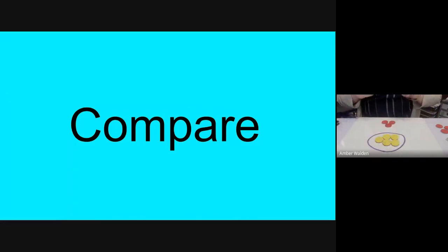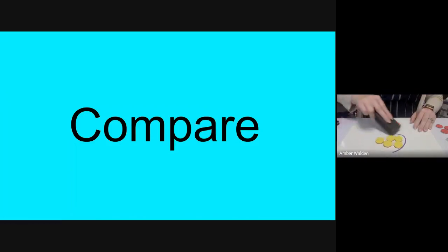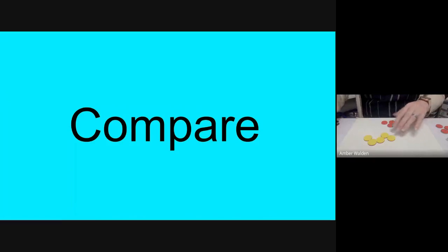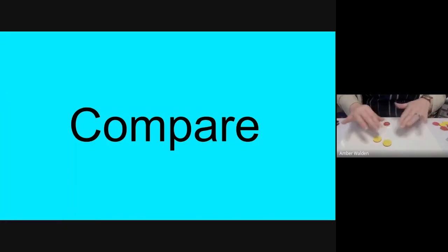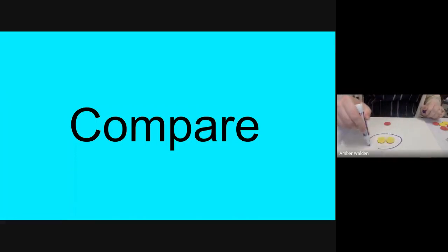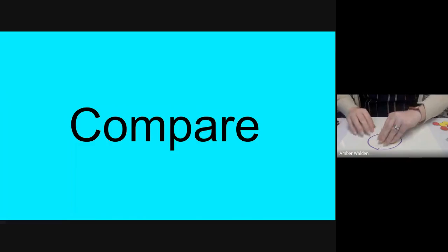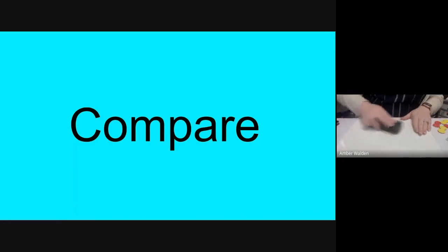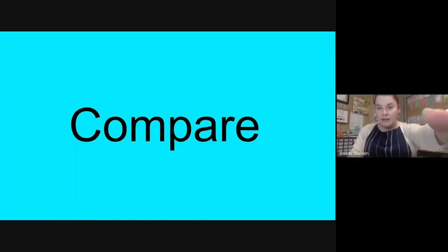Let's do one more example before I show you what you're going to be working on. What if I had two yellow and one red? Which group has the most? Yellow — so we would circle the yellow group, because two is still more than one. Good job guys and gals!